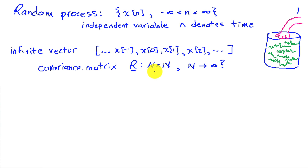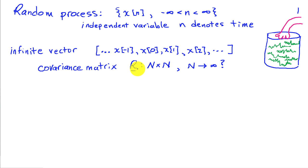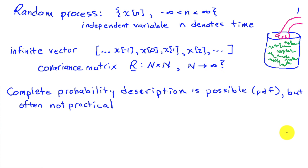We can relate this to the multivariate representations used for vectors by thinking about a vector that gets really long. The characterization we used for random vectors becomes problematic, because we took a vector of length n and defined the covariance matrix for that vector, called that R, and that was an n-by-n matrix representing all the relationships between different elements of the vector. Clearly, that becomes problematic as n goes to infinity when we have a time series getting really long. Random process descriptions allow us to get around this limitation.